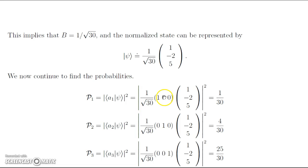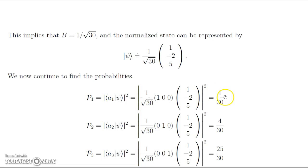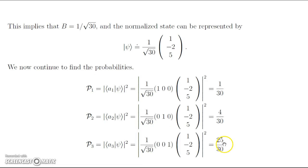Now we find the probabilities for observable A. The probability of getting A1 is the modulus squared of the inner product of bra A1 with ket psi. Using the row vector (1,0,0) times 1 over root 30 times (1,-2,5), we look at the first component and get a probability of 1 over 30 for measuring A1. Similarly, looking at the second component gives 4 over 30, and the third gives 25 over 30. These sum to 1, confirming no mathematical mistakes were made.